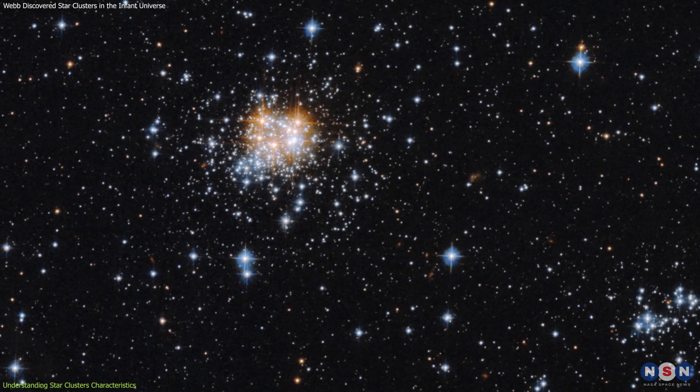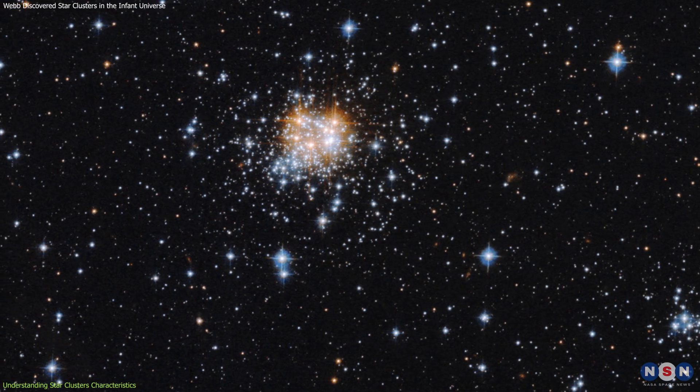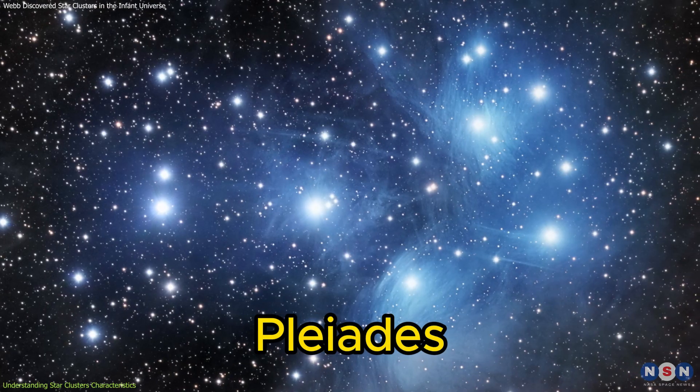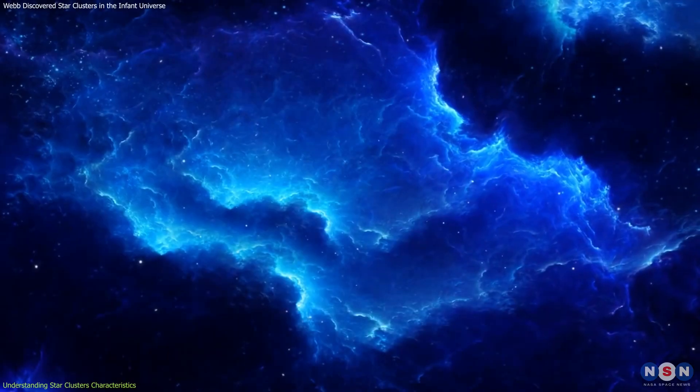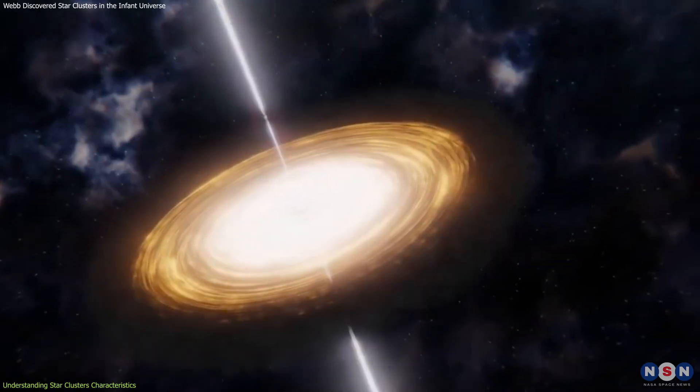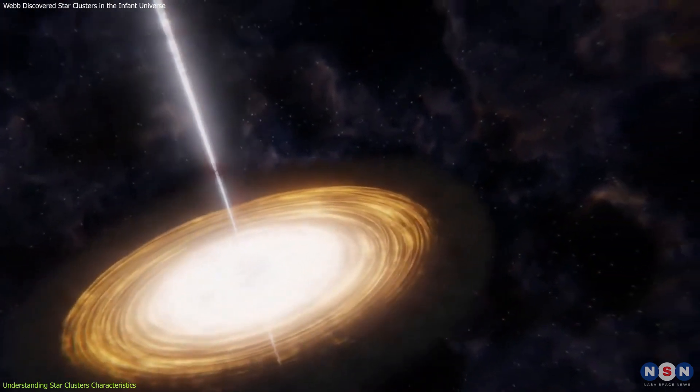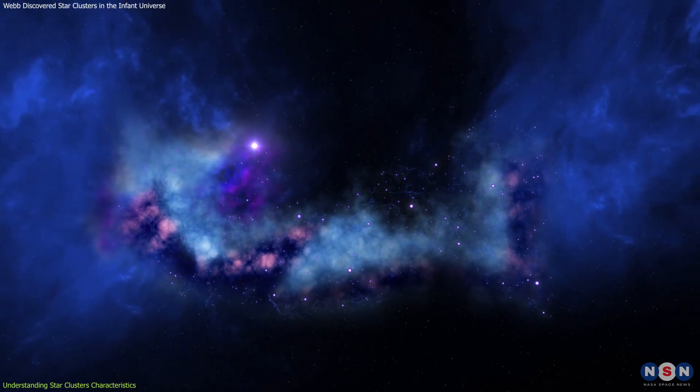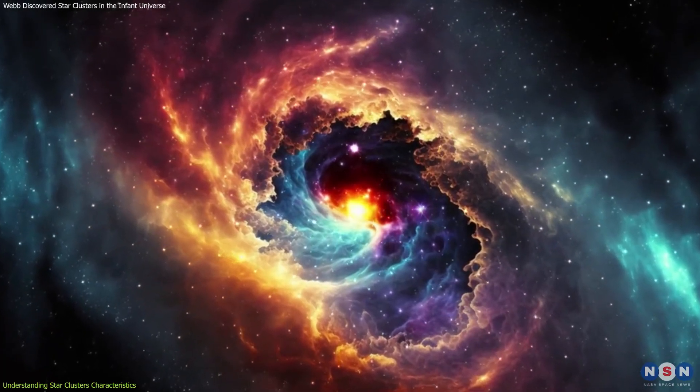Open clusters are relatively young, loosely bound groups of stars that number in the hundreds. An excellent example of an open cluster is the Pleiades, visible to the naked eye in the night sky. These stars are born together from the same giant molecular clouds, and are crucial for studying the formation and evolution of stars under similar conditions. They also tend to disperse over time due to gravitational interactions and the dynamic processes within the galaxy.